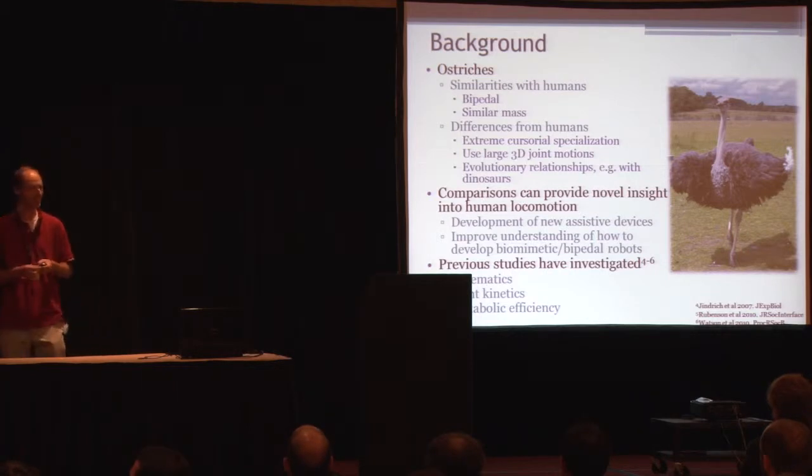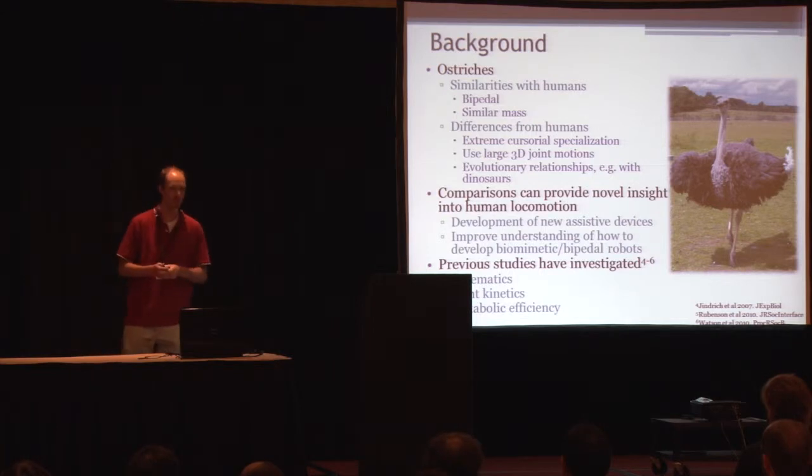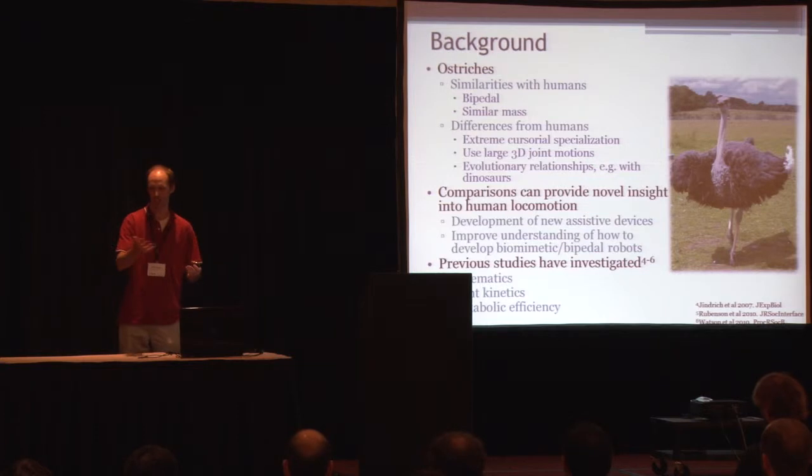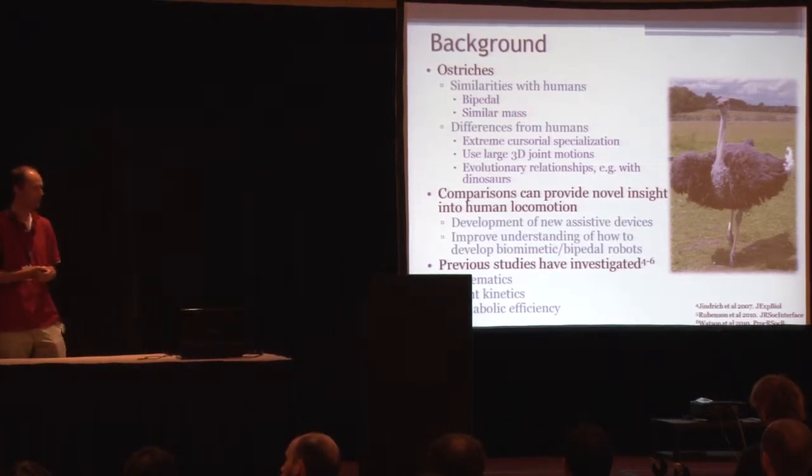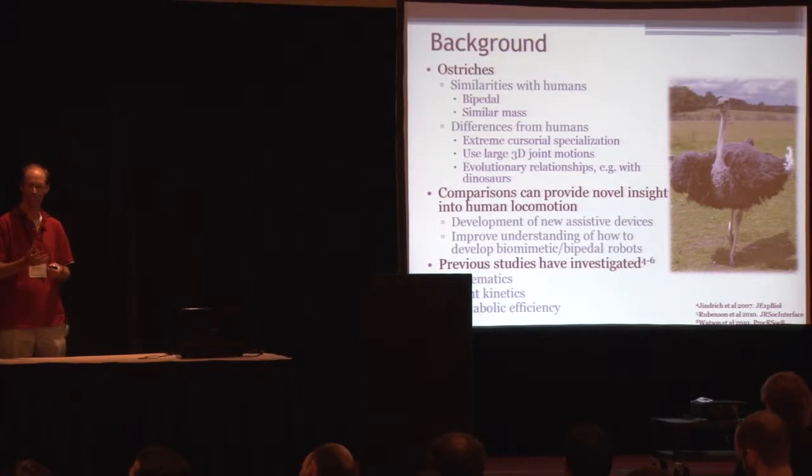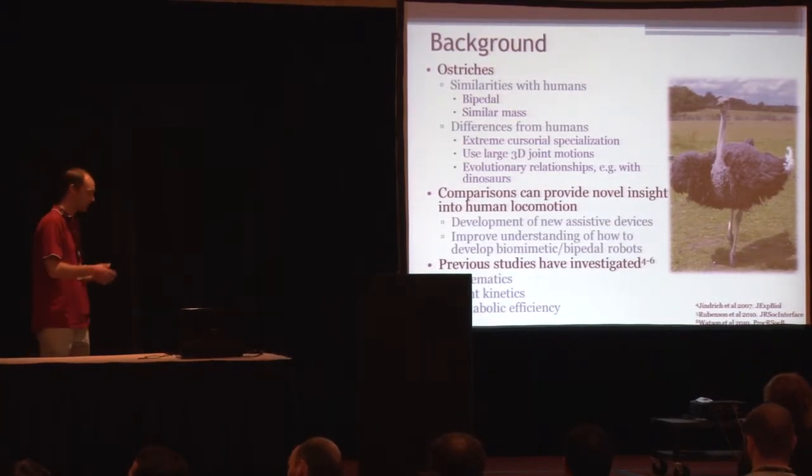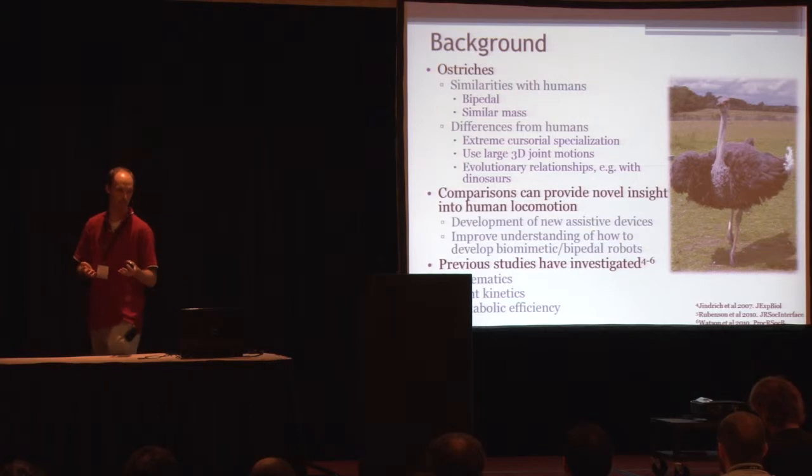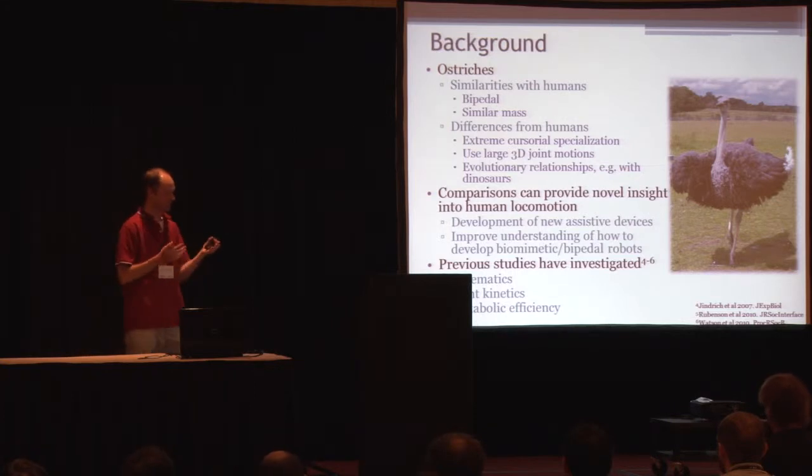So why ostriches? Ostriches are in some ways similar to humans. They're similar weight, between 100 and 120 kilograms, so a relatively large adult human, but still similar in size. They're also bipedal, but they're very different as well. They're extremely cursorial, which means they come from an evolutionary background where they're used to running away from predators. As a result, they're very efficient at running fast using low energy, and they're also very good at maneuvering, turning quickly while at speed. As people, we're not very good at running fast. So we can look at those animals, look at ostriches, and understand how that's different from humans.